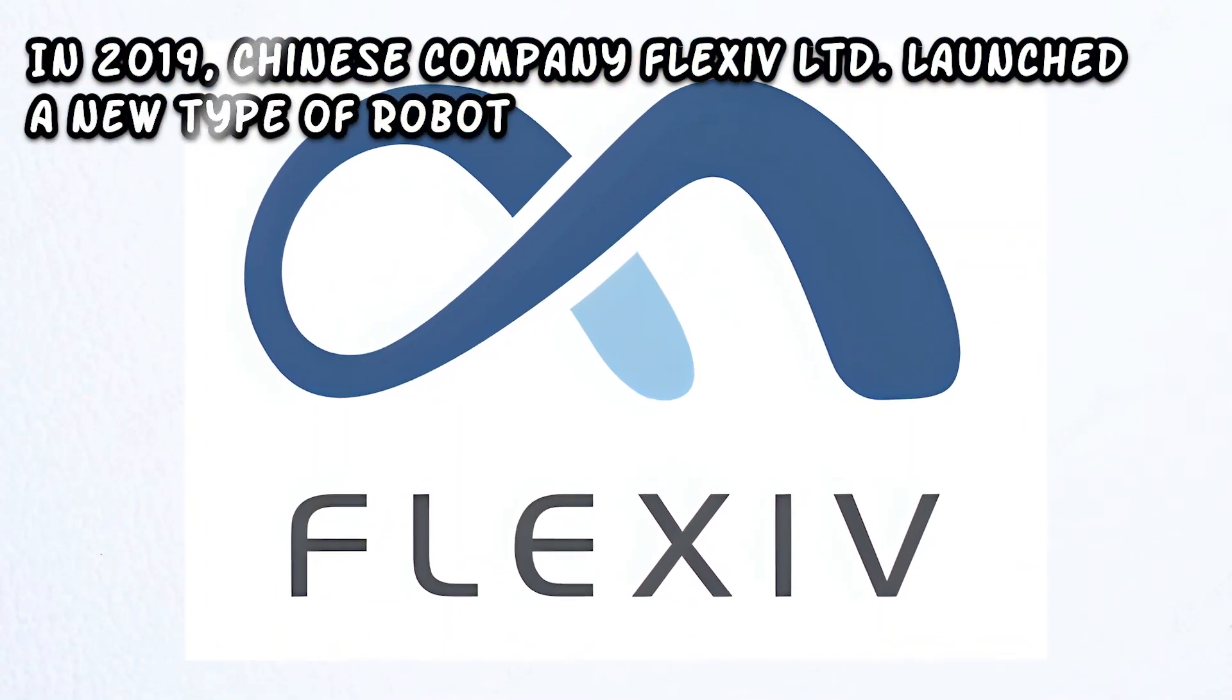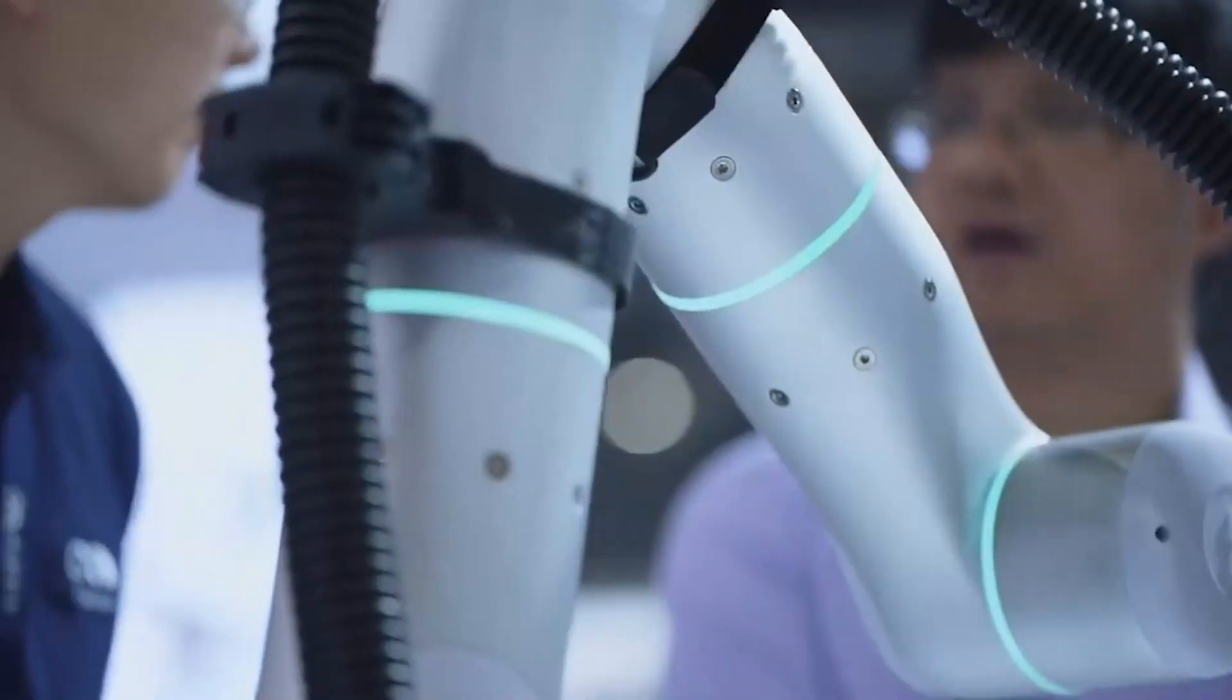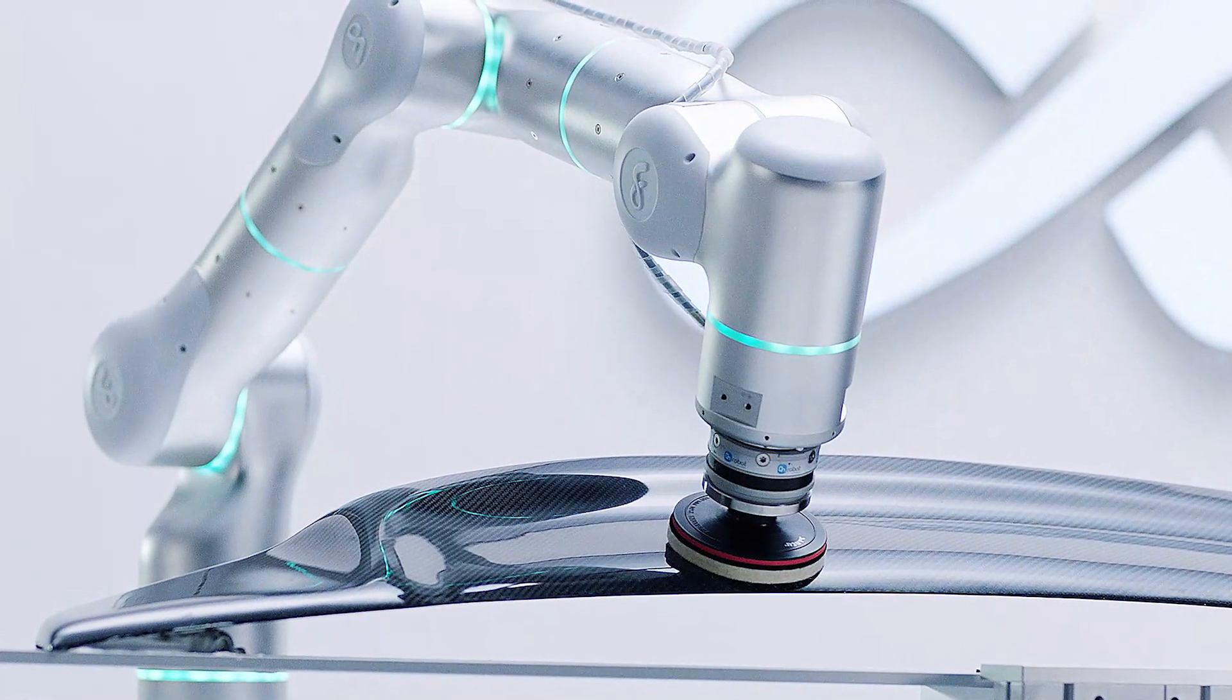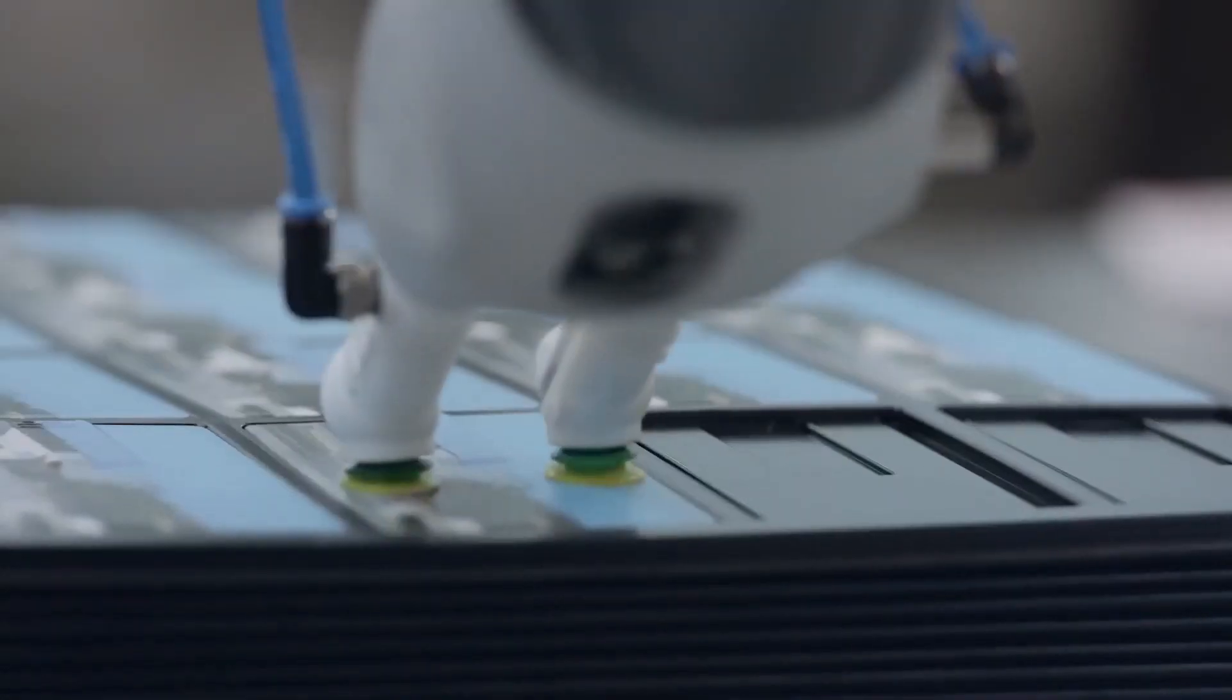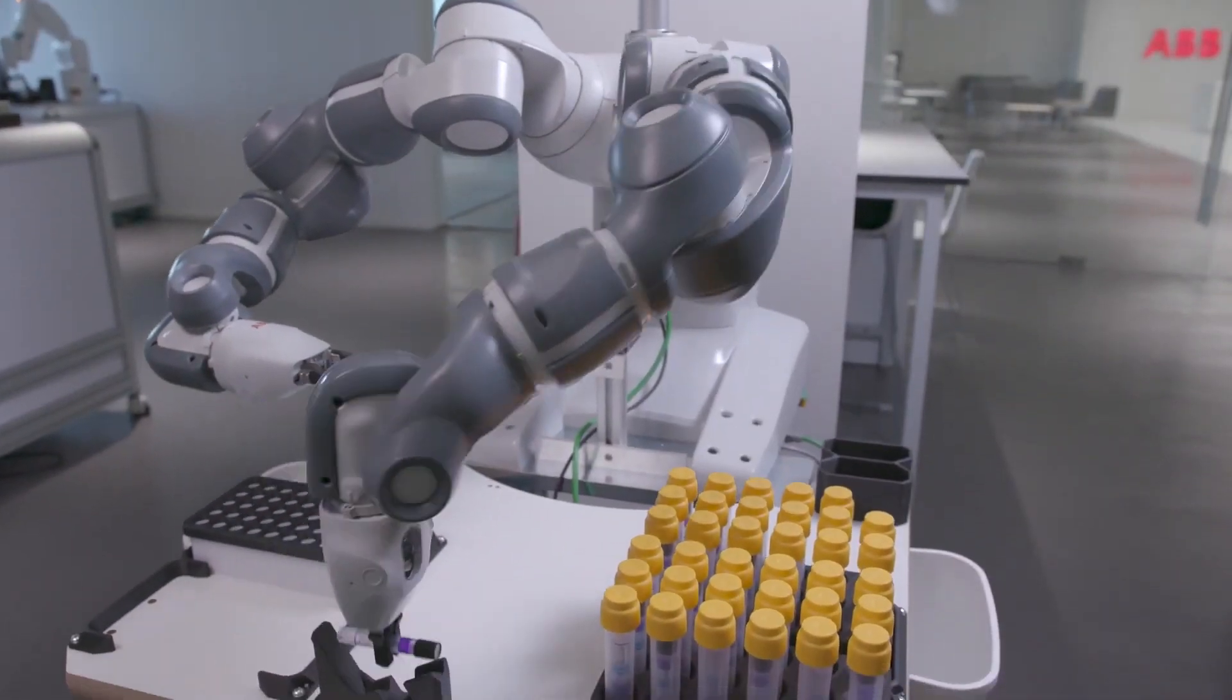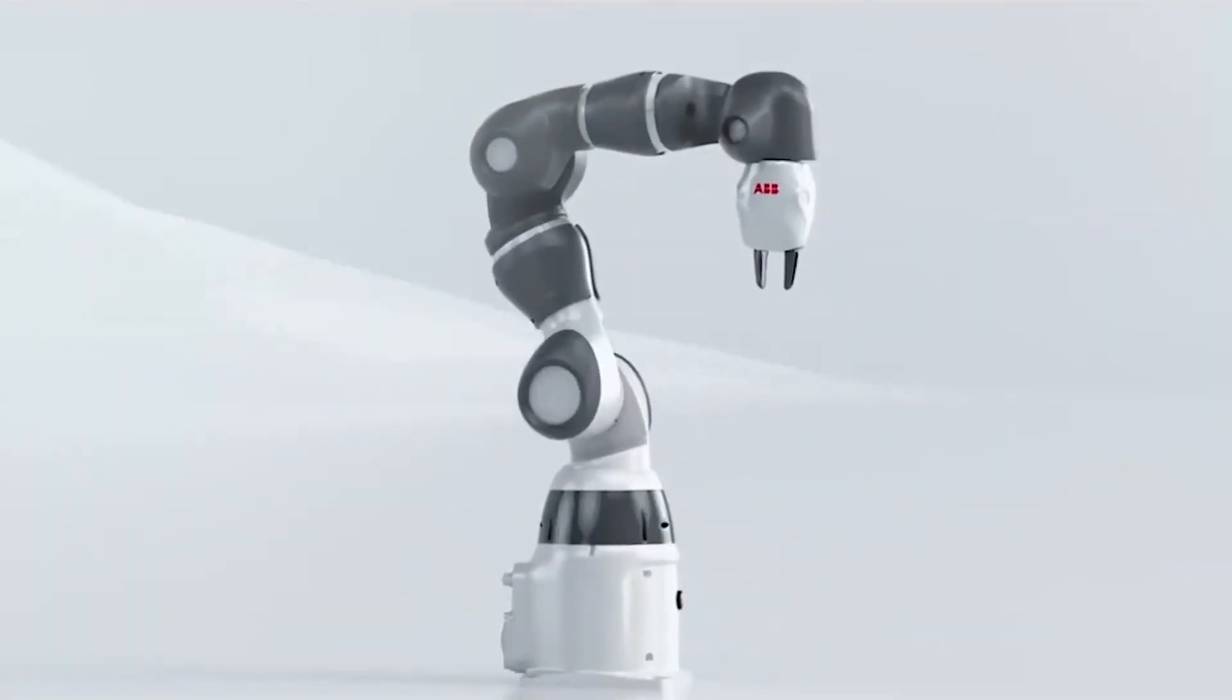In 2019 Chinese company Flexiv Limited launched a new type of robot: an adaptive robot. Spun out of Stanford University and dubbed Rizon, the adaptive robotic arm combines artificial intelligence and machine learning with proprietary force sensing technology and AI-based computer vision. These give it advanced perception and enable real-time adaptation that allows it to work in flexible or uncertain environments. Unlike other robots it tolerates location variation and its transferable intelligence allows it to be deployed between similar product lines or tasks.